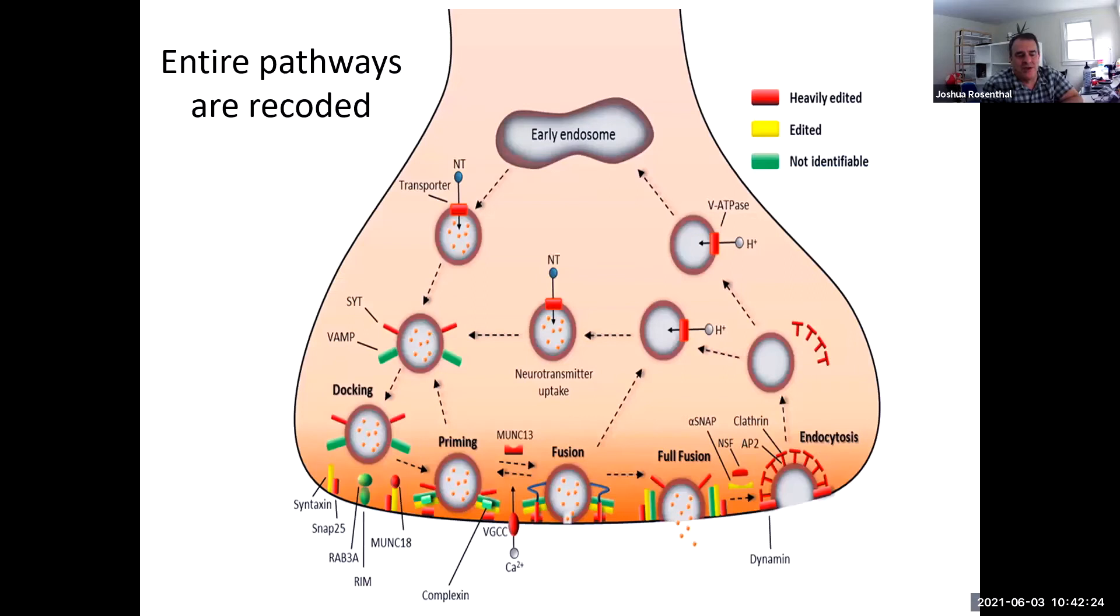Interesting thing is when you map where these recoding sites are, they're recoding entire systems and they aren't evenly divided across the neural transcriptome. For instance, what we see is things like pathways that are involved with synaptic vesicle cycle, cycling in presynaptic terminals. Pretty much every message in squid that we could identify was either heavily edited or edited to some extent. There were some messages in the typical mammalian synaptic vesicle cycle that we couldn't identify or couldn't annotate in the squid, but basically everything that we could annotate was heavily edited.